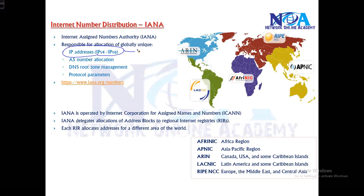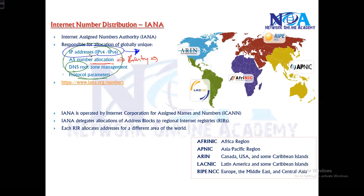IANA handles public IPs for both IPv4 and IPv6. We've already discussed IPv4. IANA also manages autonomous system numbers, which are global numbers used for identifying organizations. We'll talk more on autonomous system numbers in detail, along with other protocol parameters including DNS root management.